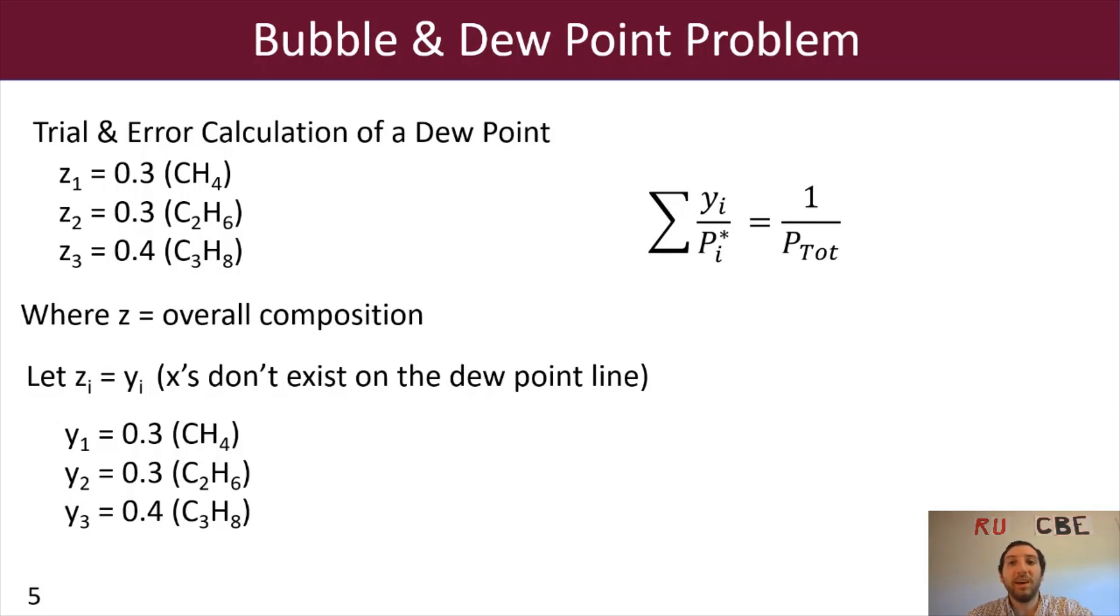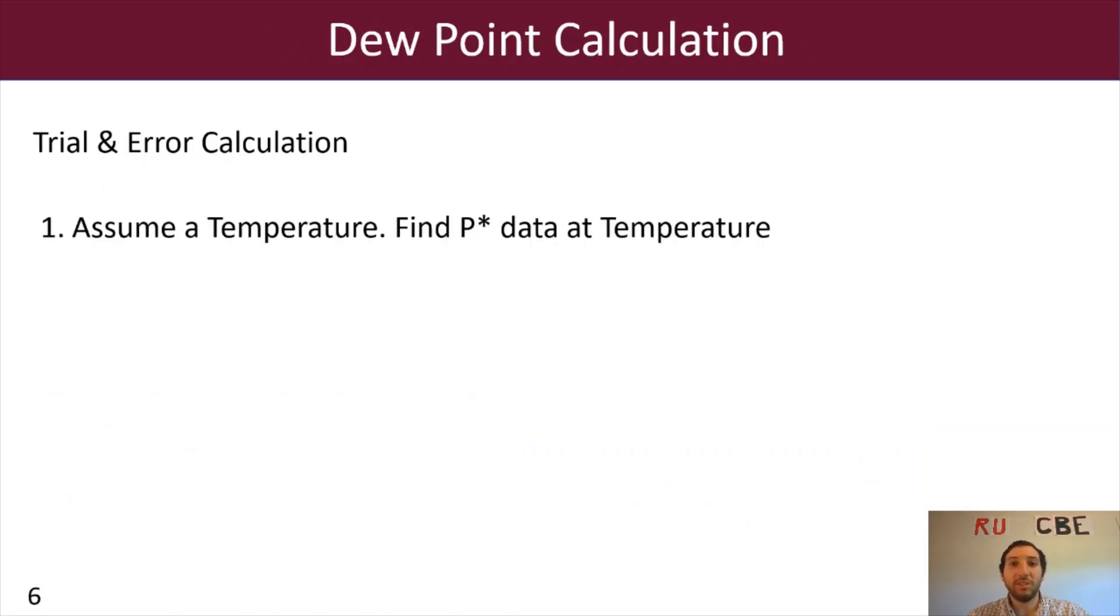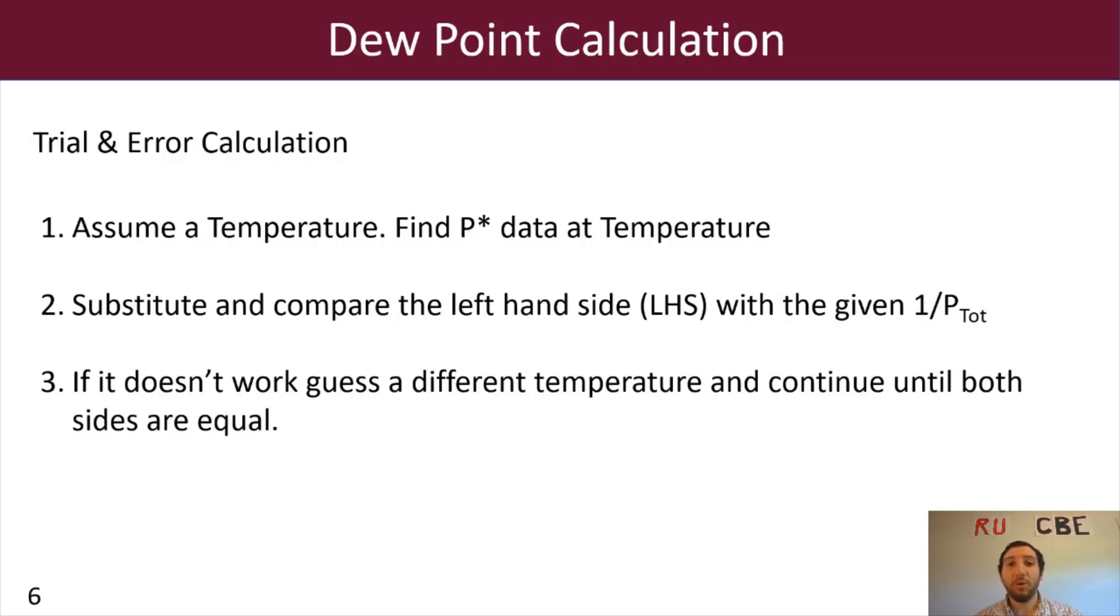So we have a ternary system, so we now will be able to expand that summation in terms of components 1, 2, and 3. So that we have y_1 over P_1 star plus y_2 over P_2 star plus y_3 over P_3 star equals 1 over P total. And again, if you had more components, you can expand this summation to incorporate all those additional components. Now we're going to do something very similar to what we did with our bubble point calculation. We are going to do a trial and error calculation. Again, we are going to assume a temperature, find P star data at that temperature. We will then substitute and compare the left-hand side with the given 1 over P total. And if the left and right-hand side don't equal out, then we're going to guess another temperature and iterate until both sides are equal.